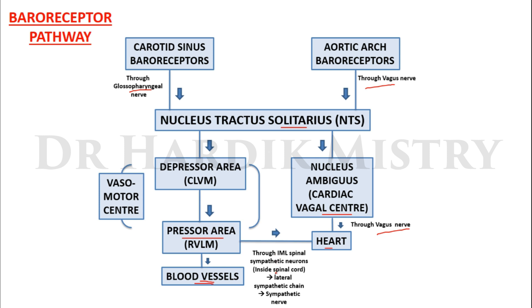From the pressure area, efferents go to the blood vessels and to the heart through the intermediolateral spinal sympathetic neurons, which are present inside the spinal cord, lateral sympathetic chain, and sympathetic nerve. This is the baroreceptor reflex pathway.